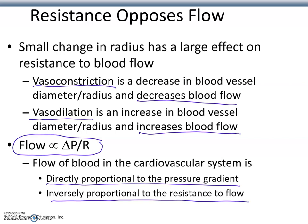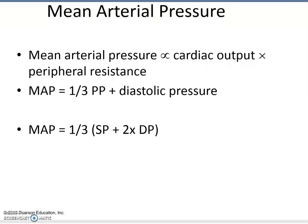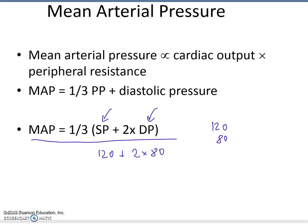Here is how you calculate mean arterial pressure. One formula: take the systolic pressure (SP) plus two times the diastolic pressure (DP), then divide by three. Assuming normal blood pressure of 120 over 80: 120 plus 2 times 80 equals 120 plus 160, which is 280. Divided by three gives 93.3, which rounds to 93 millimeters of mercury.